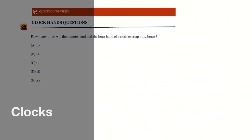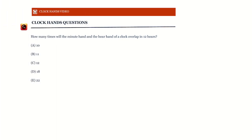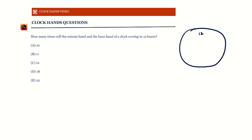Clock questions are solved using the concepts of circular motion and relative speed. We'll take a look at a particular type of clock question today. Relative speed normally has wider application, but we'll also look at circular motion because it makes our question very simple. So: how many times will the minute hand and the hour hand of a clock overlap in 12 hours?